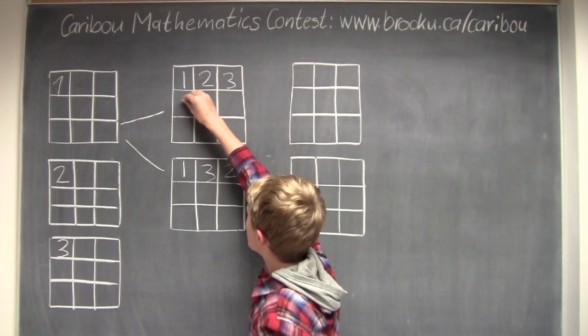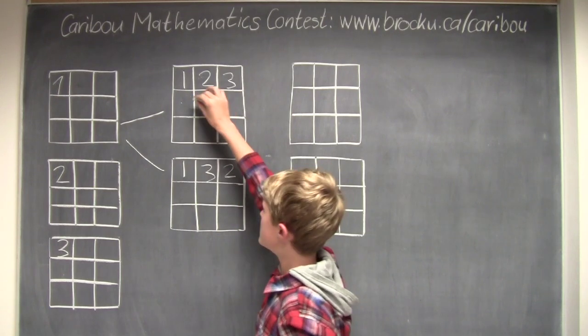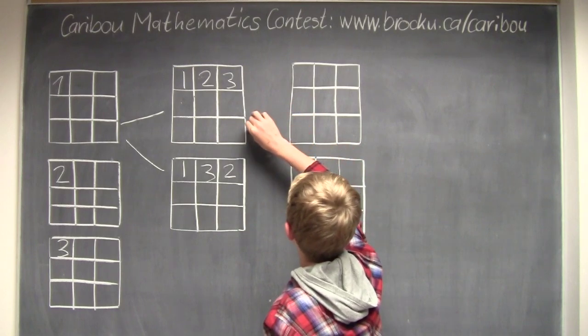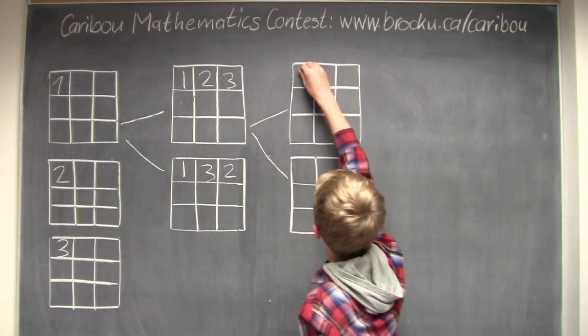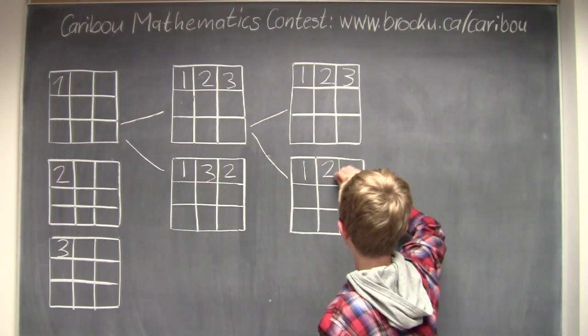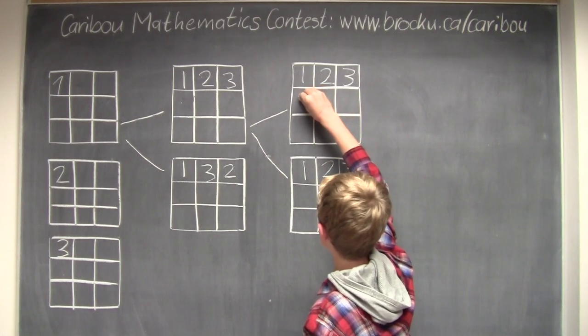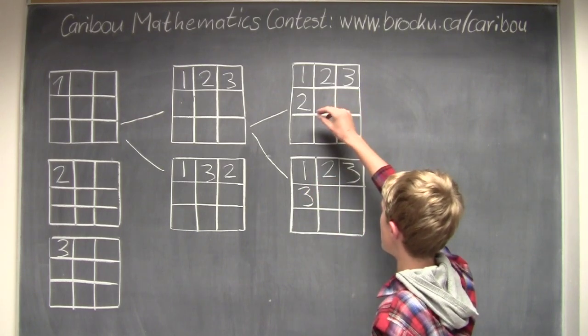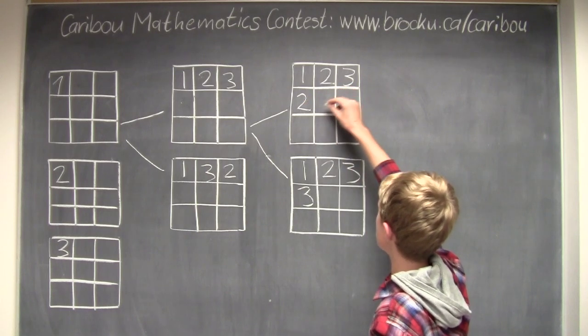So now we're going to look at this box. So it can only be—there are 2 cases it can be: 2 or 3. So now we're going to look at these 2 cases, just for now. So this can be 2 and 3. So there are 3 options: 1, 2, and 3. But now there's already 2, so it can only be 1 and 3.